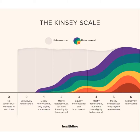The Kinsey Scale got its name from Alfred Kinsey, who was a sexologist who created the scale and published it in his book, Sexual Behavior in the Human Male, in 1948. It's simply a binary scale to describe sexual orientation that begins at zero and increases to six, zero being exclusively heterosexual to six being exclusively homosexual.